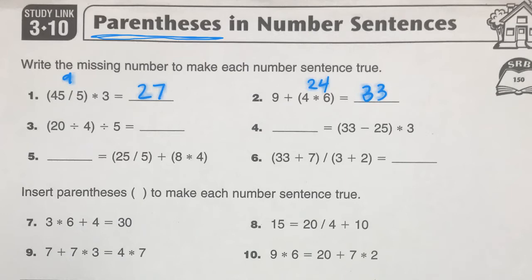Now we have two parentheses, but we'll just go left to right to do these. So 25 divided by 5, that's 5. 8 times 4, that would be 32. And now we have 5 plus 32. I'm going to let you figure the answer out.